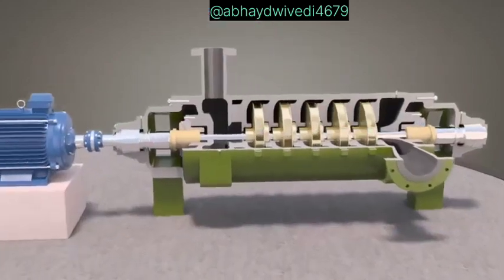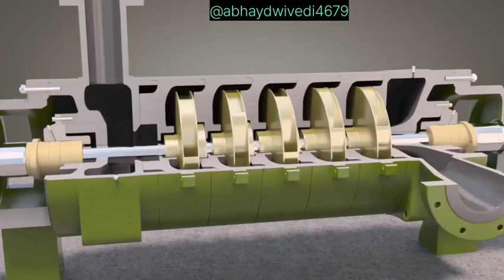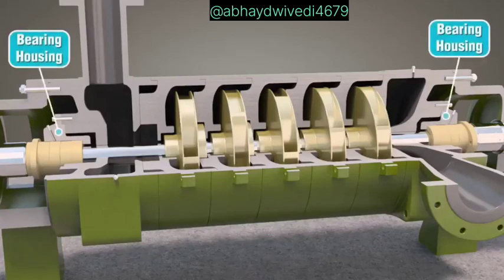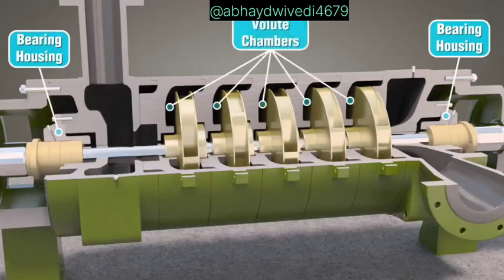The pump casing is the body of the pump and contains the shaft and impellers. The casing provides shaft bearing housings at each end and a volute chamber for each impeller.